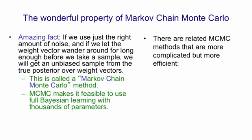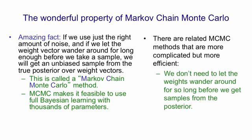The method I suggested of adding some Gaussian noise is called the Langevin method. And it's not the most efficient method. There's more sophisticated methods that are more efficient. And what I mean by more efficient is, they don't need to wander around the weight space for so long before you can start taking those red samples.